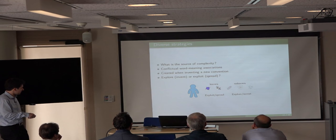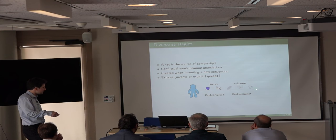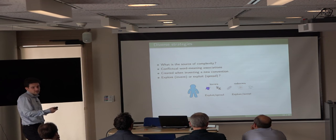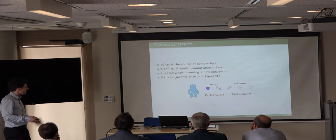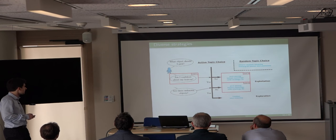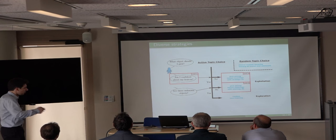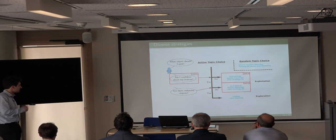Here is a simple representation: an agent has five different meanings in the world, a word for two of them, and no word for three. Exploiting or spreading means selecting one of the two known meanings; exploring means selecting one of the three unknown ones. The global architecture of the different policies and strategies is described here.